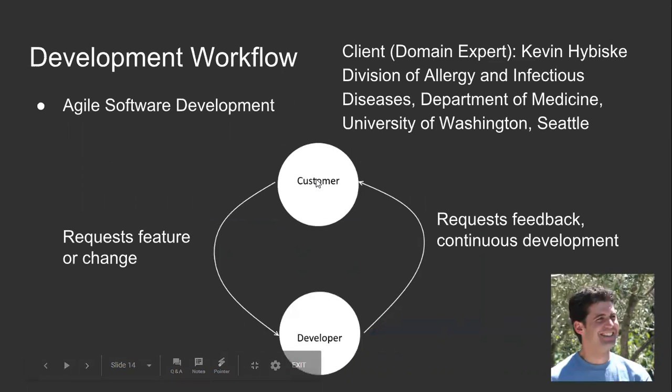My development of WikigenomesDB was influenced by the agile software development method. I created a Zen home for issue and feature tracking, while adopting a strong customer-oriented development process. In agile development, the customer is in direct contact with the developer. The customer requests new features or changes, and the developer incorporates the feedback into the next iteration. The development becomes iterative, with each new build adding new features on top of the previous one. In Clambase, Kevin Hybisk, a professor at the University of Washington, acted as our primary interface to the chlamydia research community. His domain knowledge and expertise drove the production of Clambase, and he even contributed by providing a logo and host cell image.